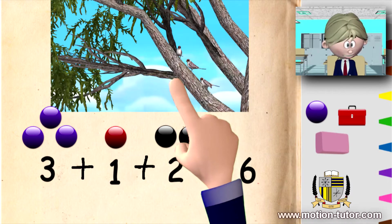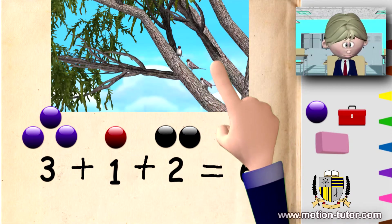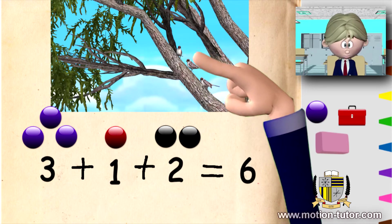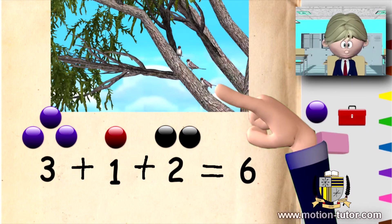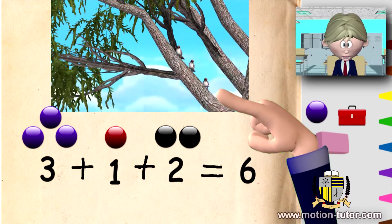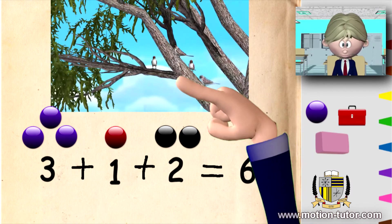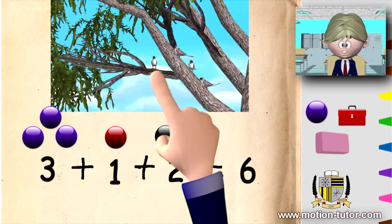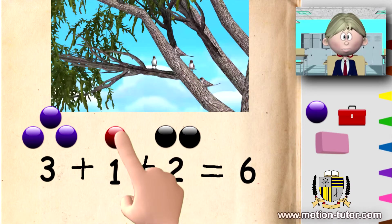So we have one, two, three birds on the branch. Then we have one, which is this one that joins them.